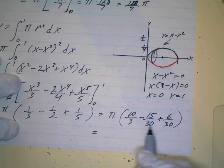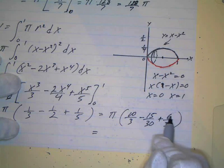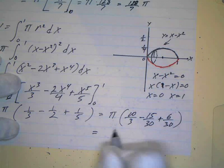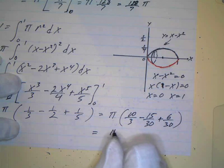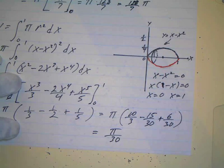I'll multiply the top and the bottom by 6 to get 30, by 15 and by 10. And this ends up equaling, and 10 plus 6 is 16 minus 15 is 1. So it just ends up being pi over 30. And that's your volume.